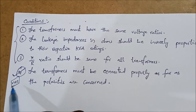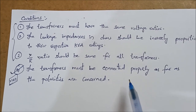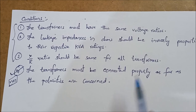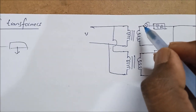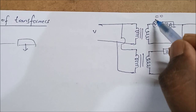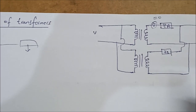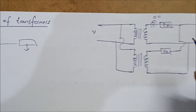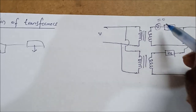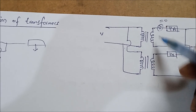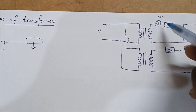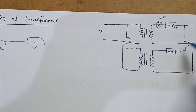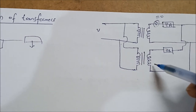The fourth point must be satisfied. If you don't connect the polarities correctly, a large amount of circulating currents will flow. To verify, connect a voltmeter across the secondary terminals before paralleling. If the voltmeter reading is zero, they are connected in proper polarity and there are no circulating currents. If the voltmeter reading equals the sum of the two secondary voltages, there is improper connection and you must reverse the connections of one of the transformers.